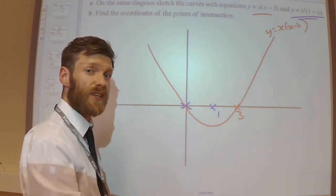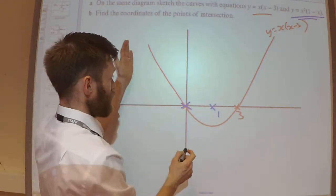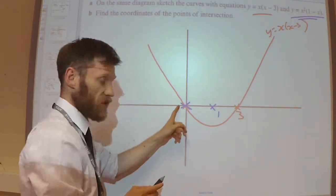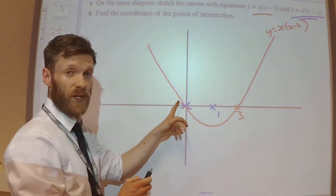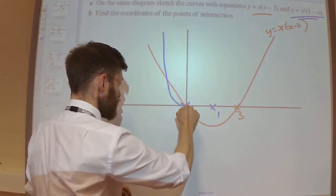Because if I cube a small number, I'm going to get a smaller number. So I know that as x is big, my blue line is going to be above the red line. When x is small, my blue line is going to be below the red line. So it's going to look something like this.